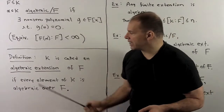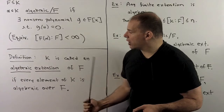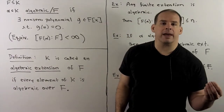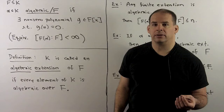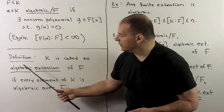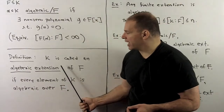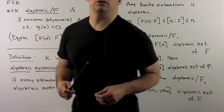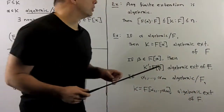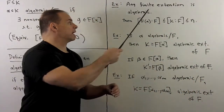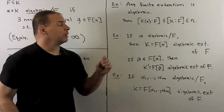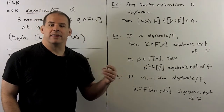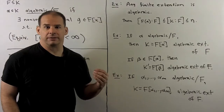With this, we have the definition: k is called an algebraic extension of f if every element of k is algebraic over f. To get a feel for algebraic extensions, let's work through some examples. First, finite extensions. If I take any finite extension over f, then that's an algebraic extension of f.